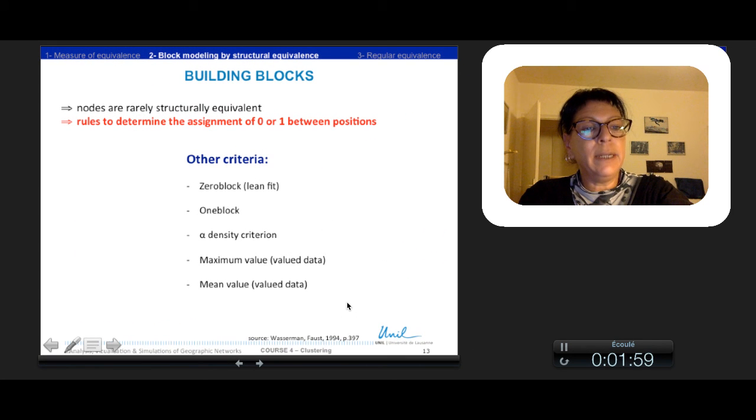So, in real networks, collections of nodes are hardly structural equivalent. So we have to create rules to determine the assignment of 0 or 1 between positions. The other criteria are zero block, one block, alpha density criteria, and for value data, maximum or mean value.